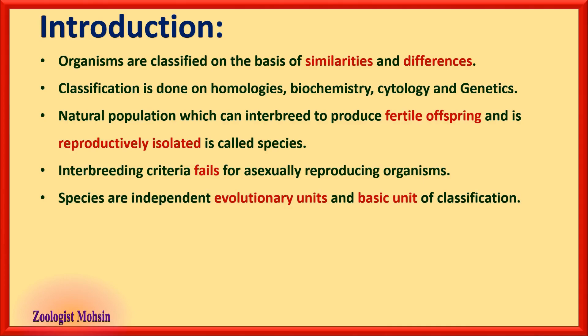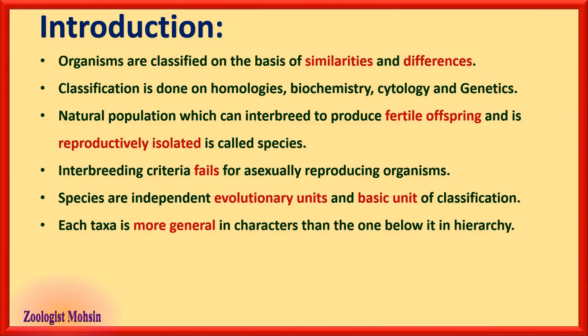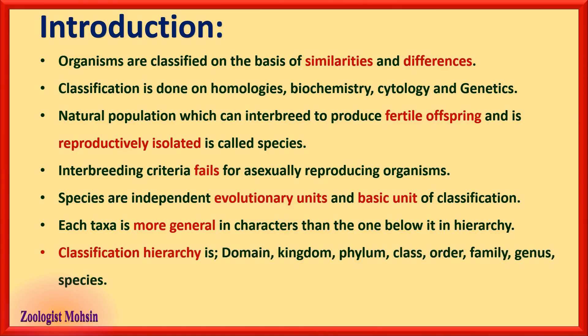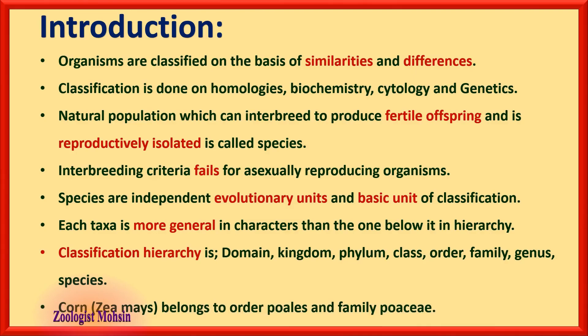Each taxon is more general in characters than the one below it in the hierarchy of classification. Phylum is more general than class, class more general than order, and order more general than family. In the opposite direction, species resemble each other more than genera, and genera more than family. The classification hierarchy in sequence is: domain, kingdom, phylum, class, order, family, genus, and then species.